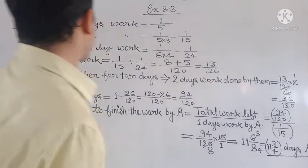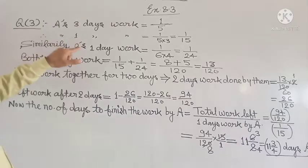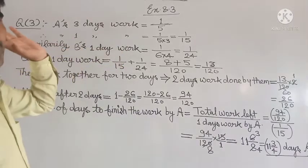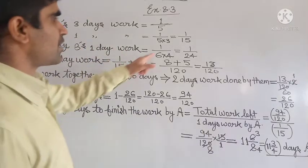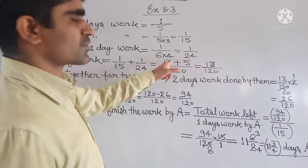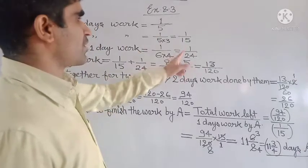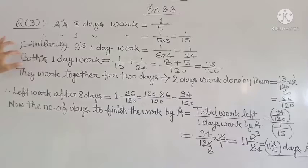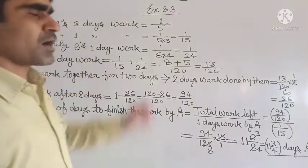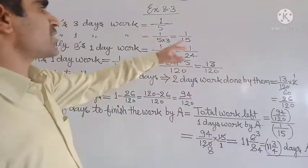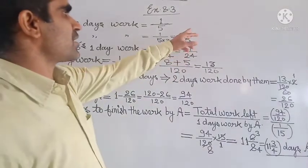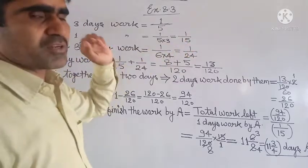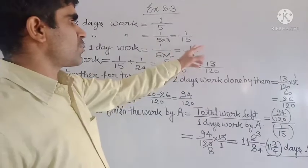Did you understand? Similarly, B's 1 day work: B can do 1 upon 6 of the work in 4 days, so 1 upon 24 will be B's 1 day work. Now when A and B work together in one day, A is 1 upon 15, B is 1 upon 24.